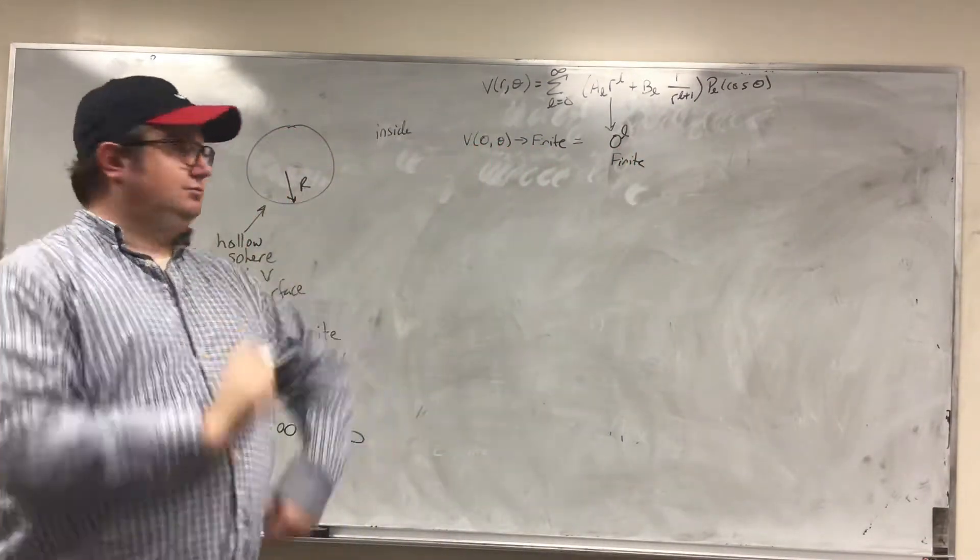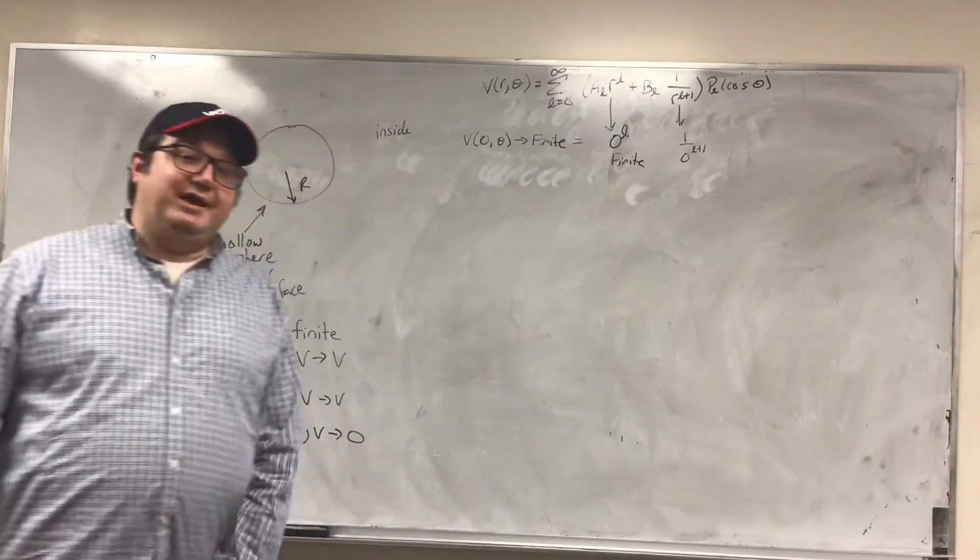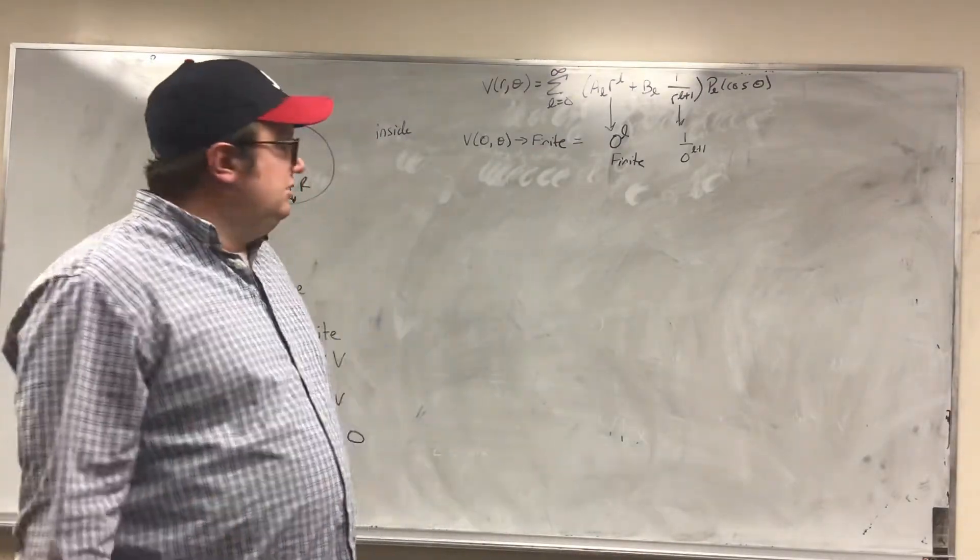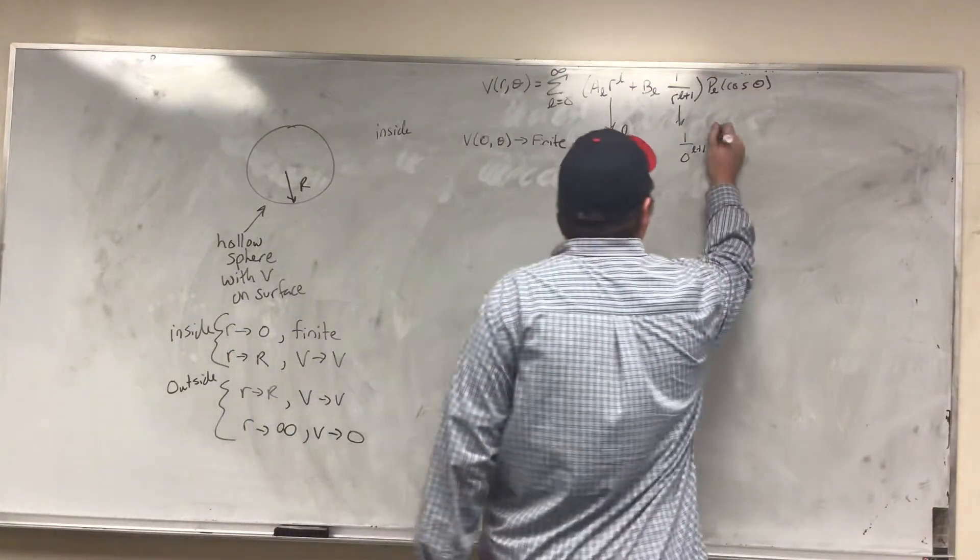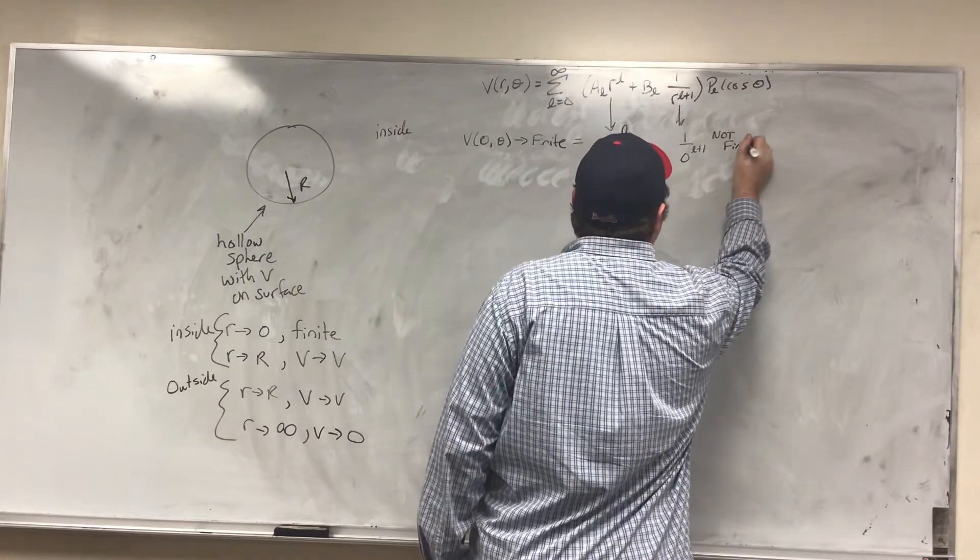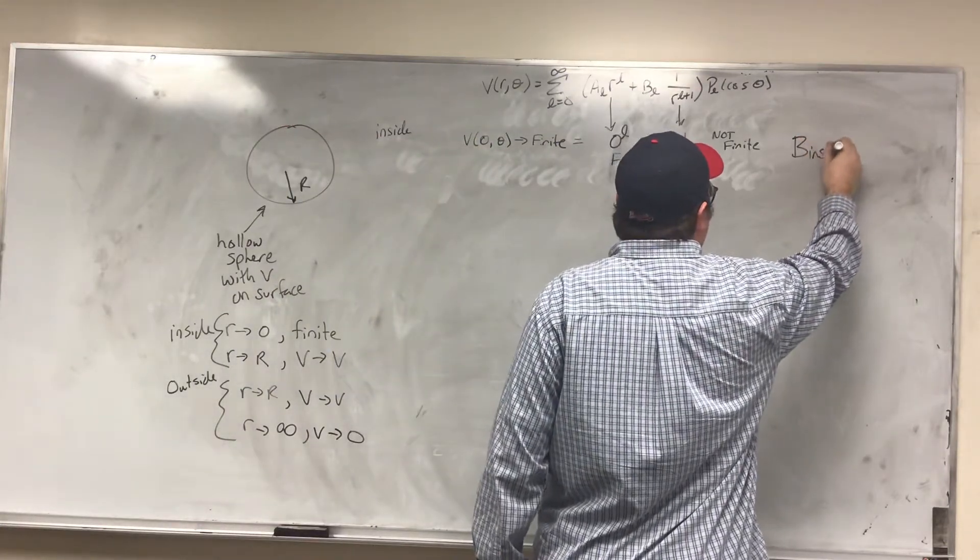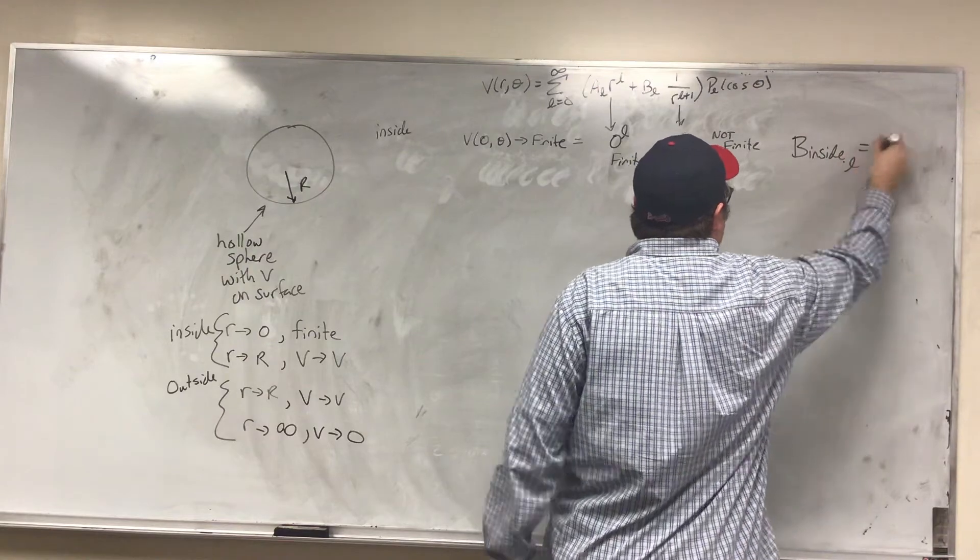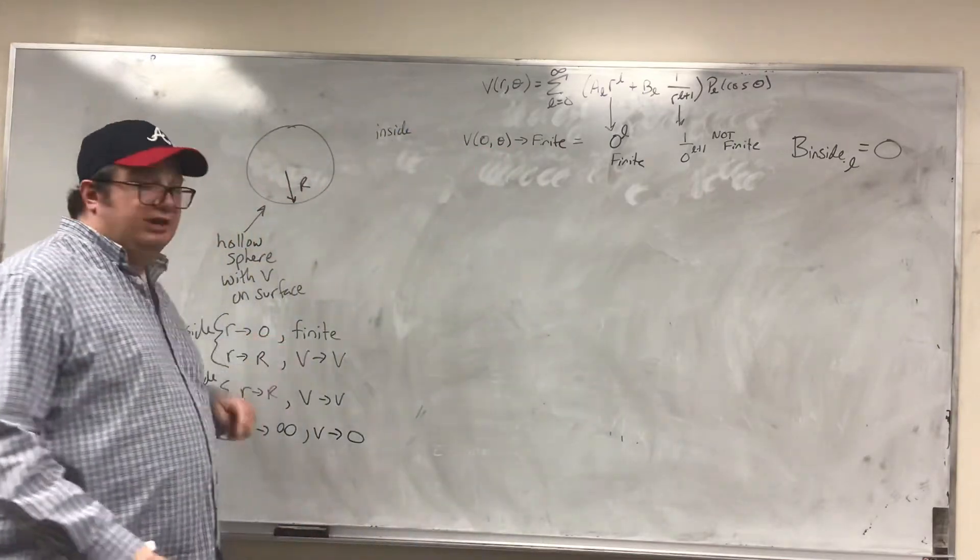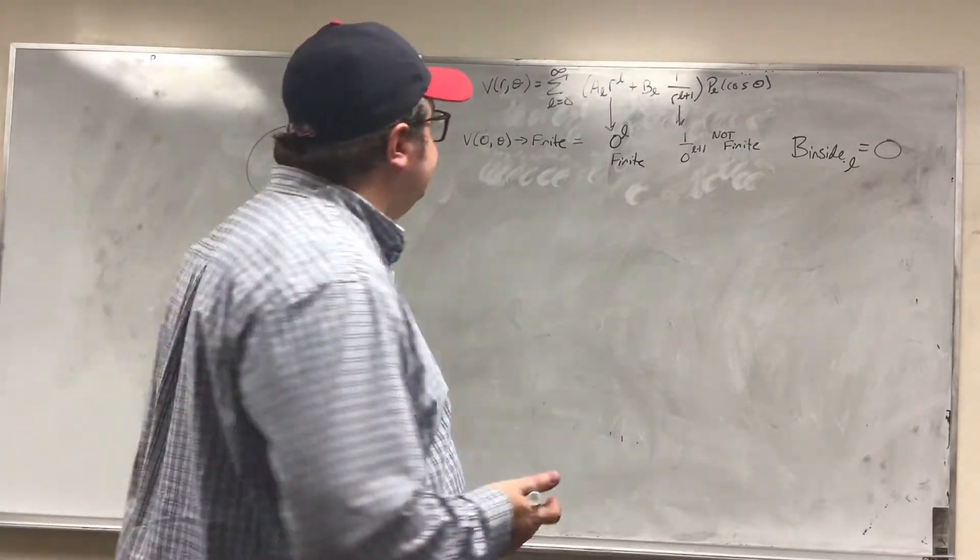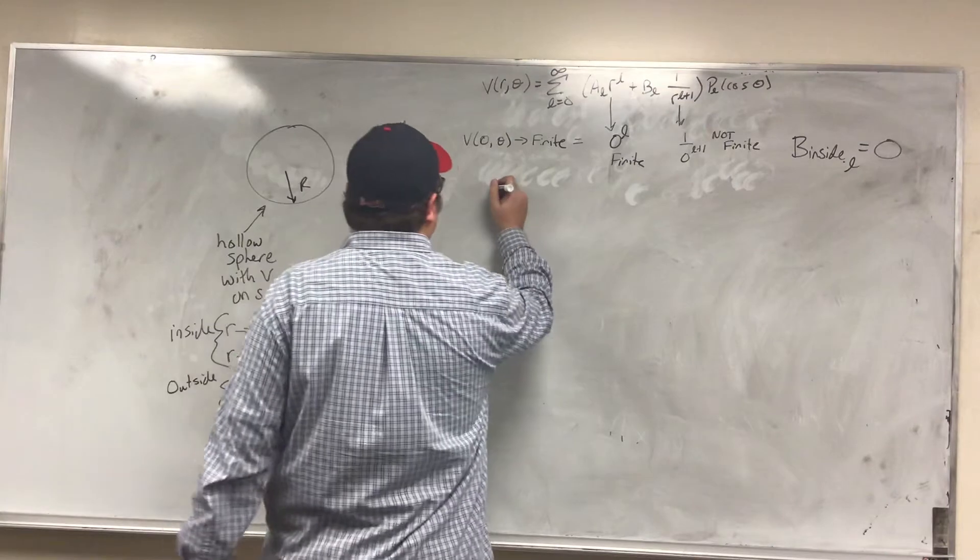That's cool. What happens when I apply one over zero to the L plus one? Well, now I got a problem, because whenever I have one over zero or I approach it, that's going to blow up and become infinite. It will not be finite. So that tells me that inside, B inside at every value of L has to be zero, or else you're not going to match that finite boundary condition when R goes to zero.